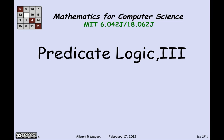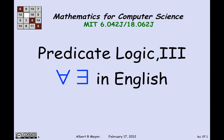In this final segment on predicate logic, there are two issues I'm going to talk about. The first is some problems with translating AE quantifiers and EA quantifiers from English into logic. We've seen examples in class that English is ambiguous, and I want to show you two that are interesting and provocative — just as a warning that the translation is not always routine.